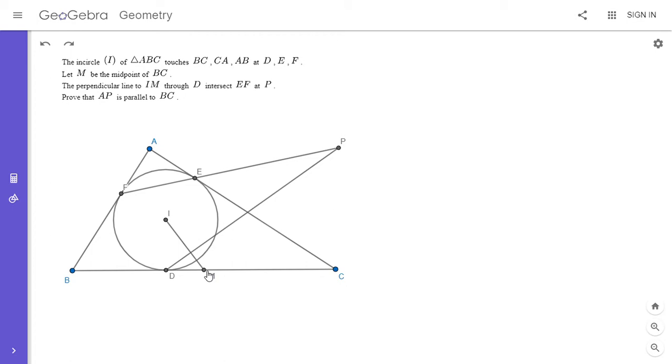And then also, not only that, but there's a certain symmetry here. So MD is tangent to the incircle. So if we label this other point here, which I'm going to label G, since IM is perpendicular to DG,